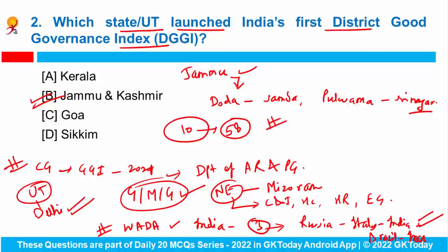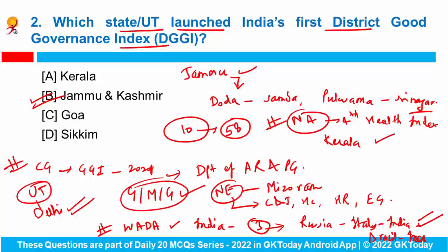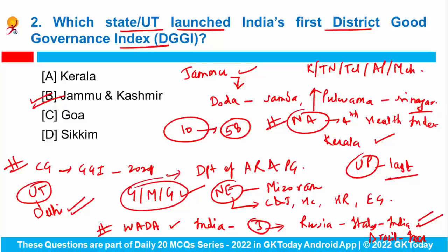NITI Aayog has recently released its fourth edition of the health index. Kerala has emerged as the top performer in overall health performance among larger states, while Uttar Pradesh has been ranked last. The top five states are Kerala, Tamil Nadu, Telangana, Andhra Pradesh, and Maharashtra. The bottom three are UP, Bihar, and Madhya Pradesh.